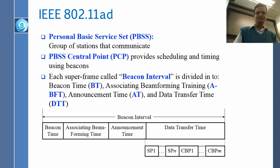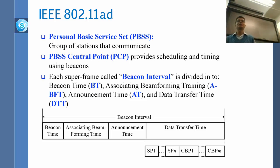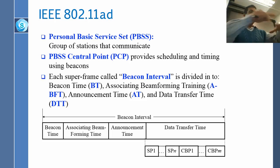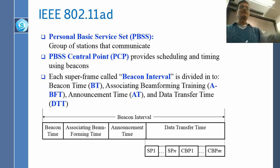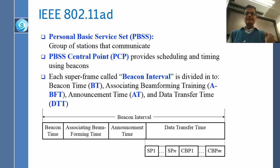So what is 11ad? Instead of the basic service set (BSS) which we used to have before, now we have personal basic service set, PBSS. These are a group of stations that want to communicate. In one room you might have many PBSS, because you may want to communicate with your TV and somebody else may want to communicate with their TV or other devices. Each PBSS has a central point like an access point, but it is called PCP.